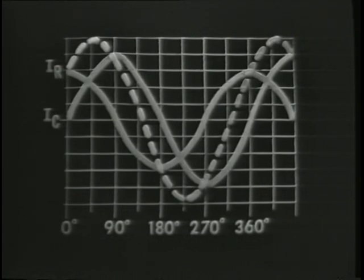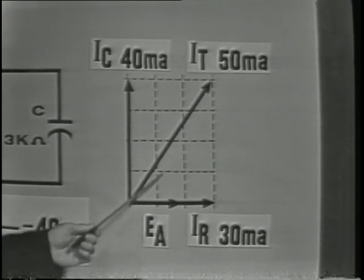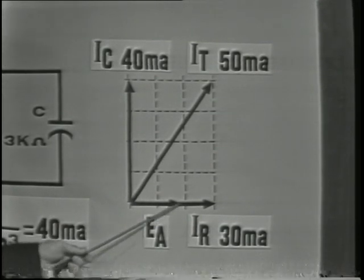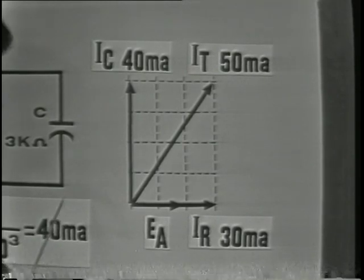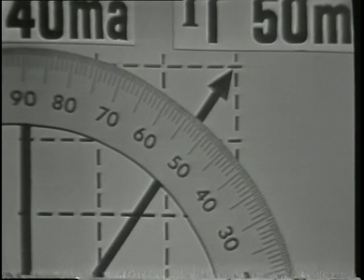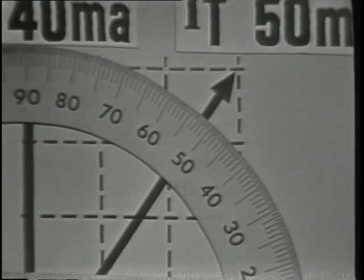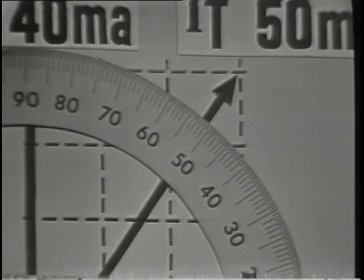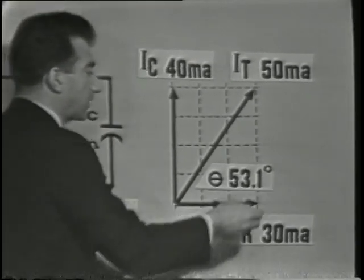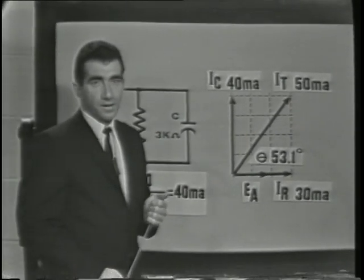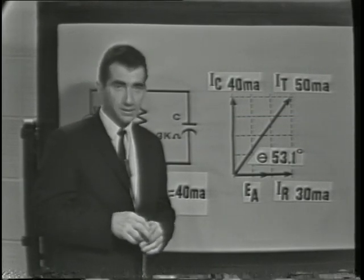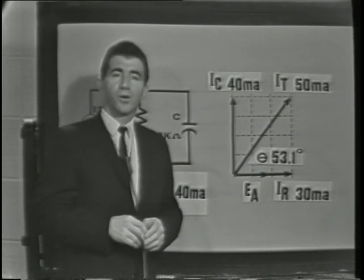The approximate phase angle may be found by simply measuring angle theta, which is the angle between the total current and the reference or EA. We can measure the angle by applying a protractor to the schematic or the vector drawing, and we see that the approximate angle is 53 degrees. However, we know that the exact angle is 53.1 degrees. The graphical solution for these values is approximate at best and would be difficult to handle in a more complex circuit.